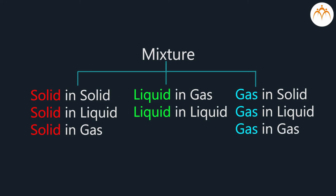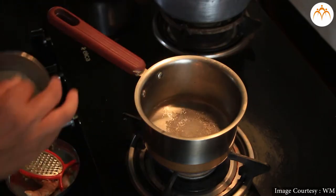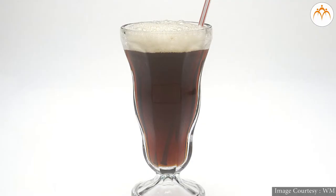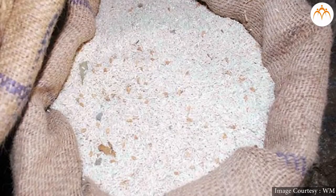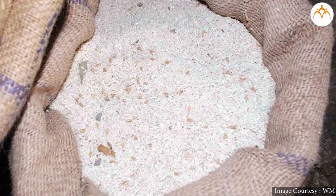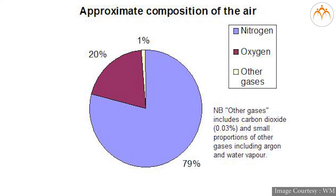Can you classify the above mixtures in these categories? Let us think. Sugar in water is a solid in liquid mixture, whereas cold drinks have gas dissolved in liquid. Rice grains and dirt is a solid in solid mixture, and of course the air has lots of gases mixed together, so it is primarily a gas in gas mixture.